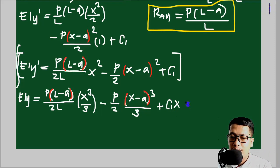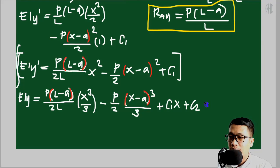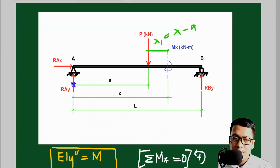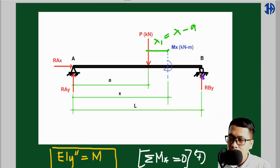We have two integration constants C1 and C2 whose values we do not know yet. We apply boundary conditions: at x equals 0 (at the left support), deflection y equals 0; and at x equals L (at the right support), deflection y also equals 0. These two conditions allow us to solve for C1 and C2.